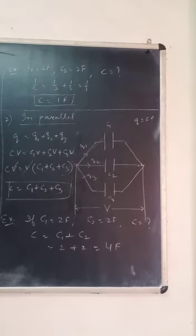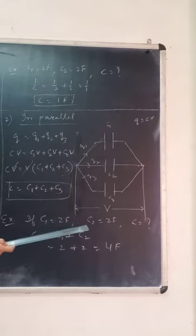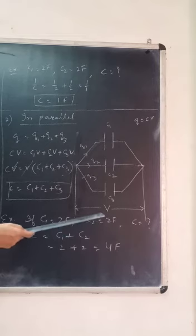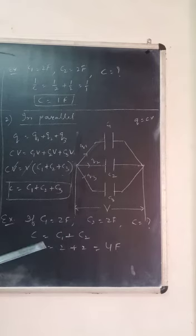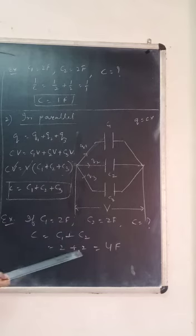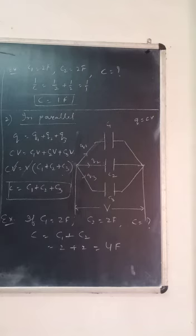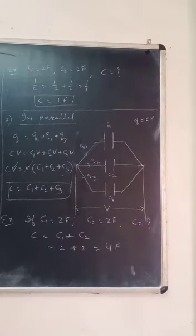For example, if C1 = 2 farad and C2 = 4 farad, then in parallel C = 2 + 4 = 6 farad. This is the method to solve problems. In the next lecture, I will give more examples with diagrams.